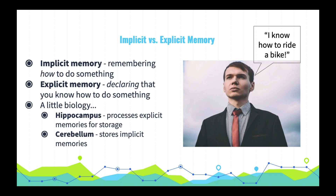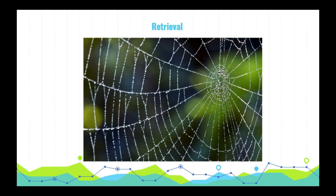Note that the hippocampus is essential for processing explicit memories for storage, while the cerebellum is key for storing implicit memories. Finally, let's cover retrieval. Think of your memory like a spiderweb — each piece of information is interconnected with many others.